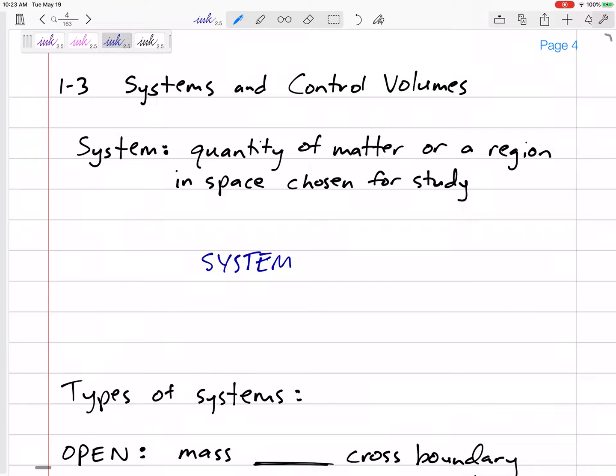So we've got a system and we've got a boundary. This dotted line is our boundary, and whatever is outside of the boundary that is not inside our system, those are our surroundings. So just some definitions.